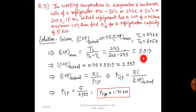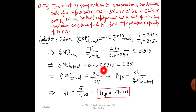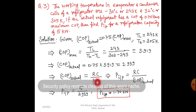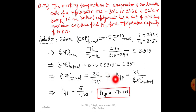Maximum COP is calculated as 3.919. Then COP_actual equals 0.75 multiplied by 3.919, which gives 2.939. Using the formula COP_actual equals refrigeration capacity divided by power input, we can find power input. Finally, the power input is 1.70 kilowatt.